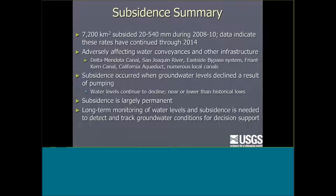This is absolutely affecting water conveyances and other infrastructure, including the federal Delta Mendota Canal, the Friant-Kern Canal, and the California Aqueduct, as well as the San Joaquin River. The East Side Bypass is a very important flood control channel — we haven't had to use it in a while, but we're concerned about how it will perform when we do, as it's supposed to prevent severe flooding in the San Joaquin Valley.